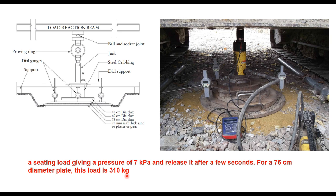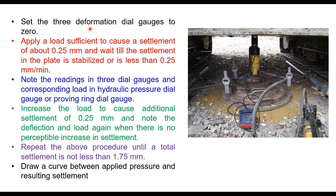Once you apply this seating load, set the three deformation dial gauges to zero. Apply a load sufficient to cause a settlement of about 0.25 millimeter and wait till the settlement in the plate is stabilized or is less than 0.25 millimeter per minute.